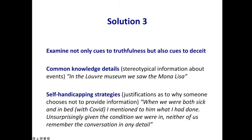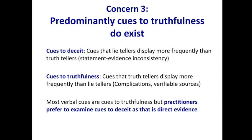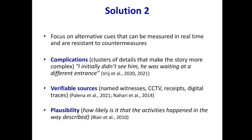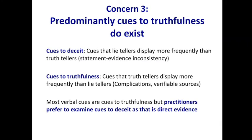The third problem is this: we should not only examine cues to truthfulness, but also cues to deceit. Cues to deceit are cues that liars display more frequently than truth tellers — for example, inconsistencies between statement and evidence. Cues to truthfulness are cues that truth tellers display more frequently than liars — complications, verifiable sources, plausibility are all cues to truthfulness. Most verbal cues examined are cues to truthfulness.